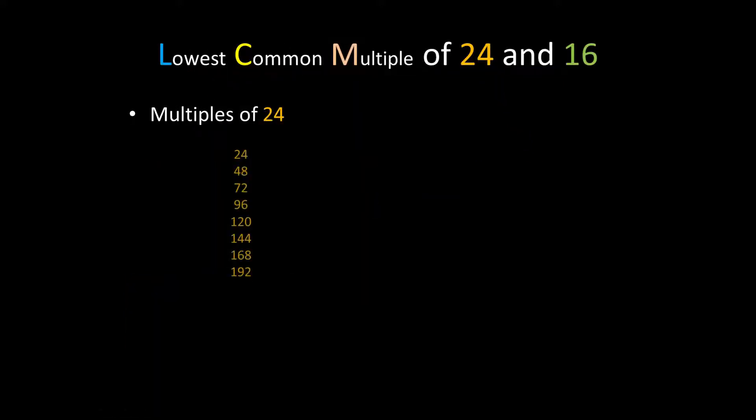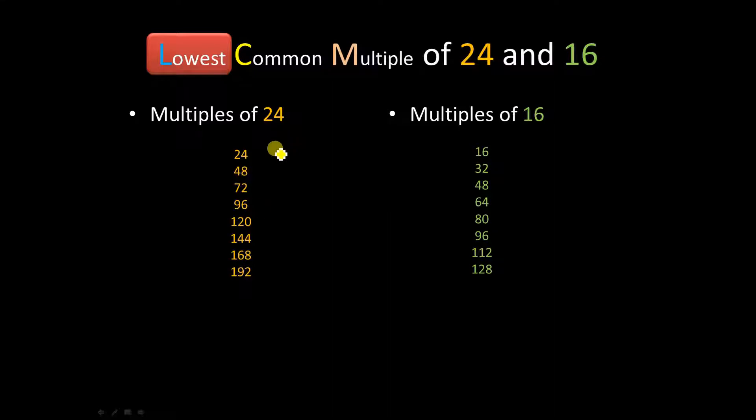The multiples of 24 are here, and the multiples of 16 are here. When you're trying to find the lowest common multiple, you're looking for the smallest number that's in both lists. Both lists are the multiples of these two numbers, so you're looking for the smallest one, so of course it's 48. Now, some of these others, like 96, they are common multiples, yes, but they are not the lowest common multiple. And that's what you're looking for, the lowest common multiple.